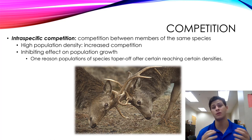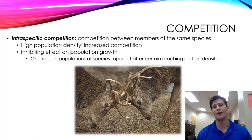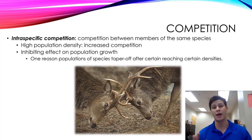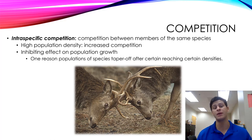We have an example here of two stags competing to gain the right to mate with a given female. Because this is a density-dependent limiting factor, intraspecific competition tends to have an inhibiting effect on population growth. One of the reasons populations taper off as they get too big is intraspecific competition — organisms are competing with other members of the same species in order to gain resources.